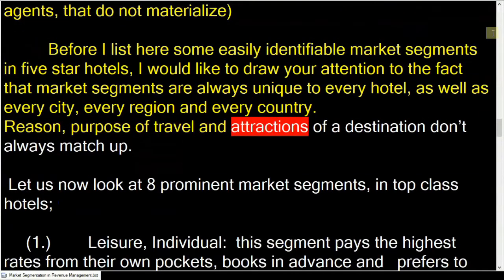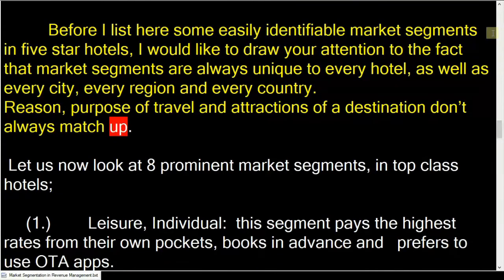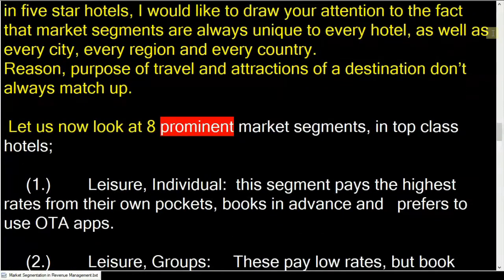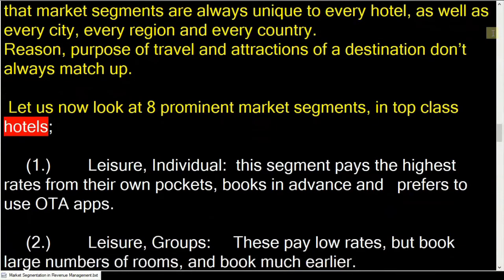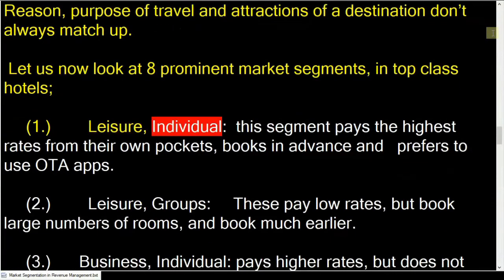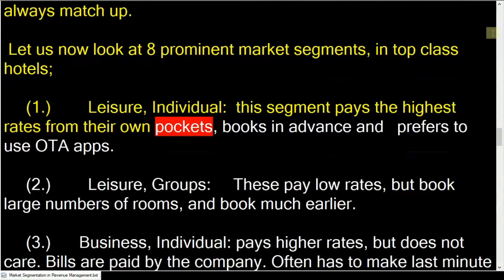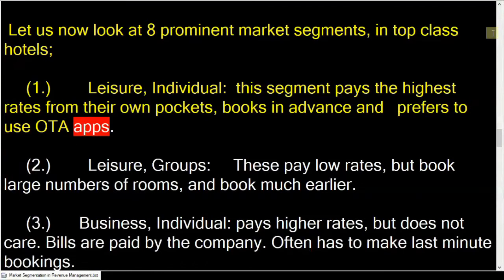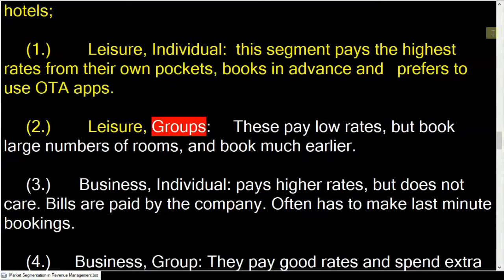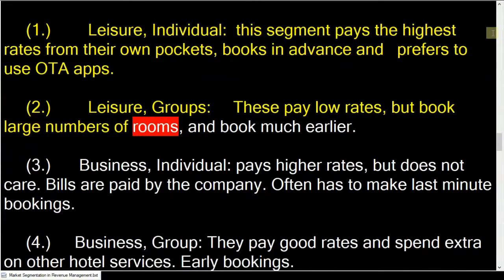Let us now look at eight prominent market segments in top-class hotels. Leisure individual: this segment pays the highest rates from their own pockets, books in advance, and prefers to use OTA apps. Leisure groups: these pay low rates, but book large numbers of rooms, and book much earlier.